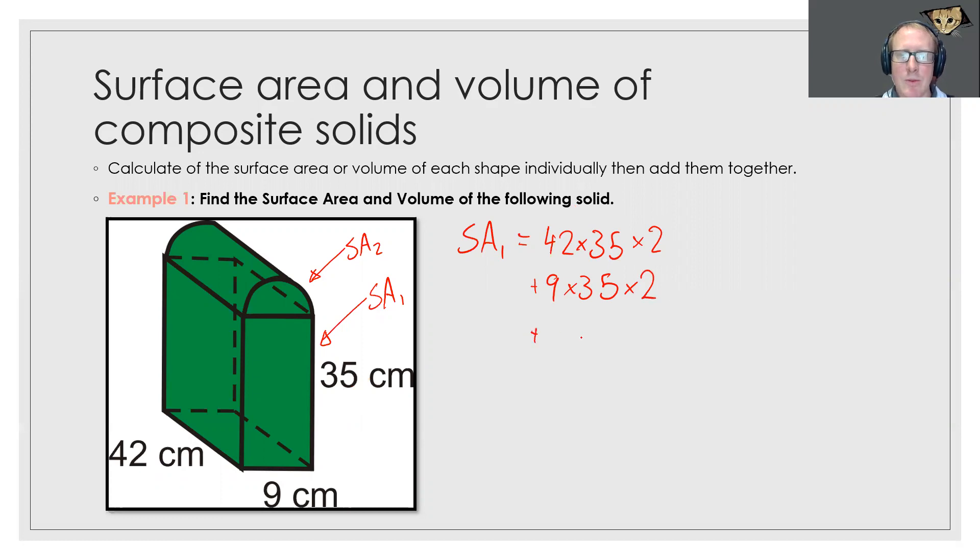Finally we've got the bottom which is 9 times 42. Now we don't times by 2 because we can't actually see the top of this shape, so we'll just leave it as that. We quickly put that in our calculator and I get 3948 centimeters squared. That's surface area 1.